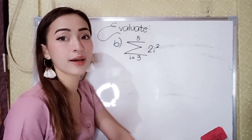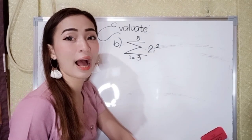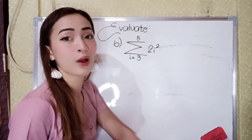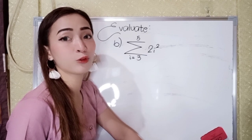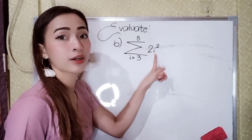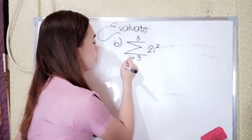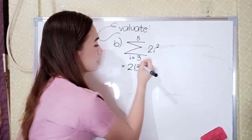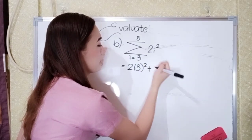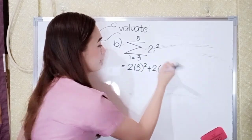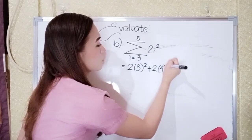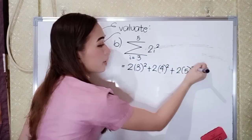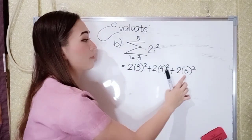For letter B, we have the summation of 2i squared from i equals 3 to 5. Again, just substitute the values 3, 4, and 5 to the given. So we have: 2 times 3 squared plus 2 times 4 squared plus 2 times 5 squared, from 3 to 5.